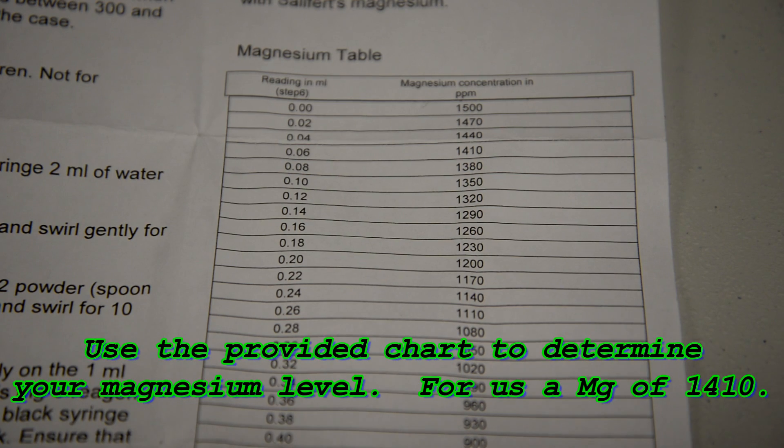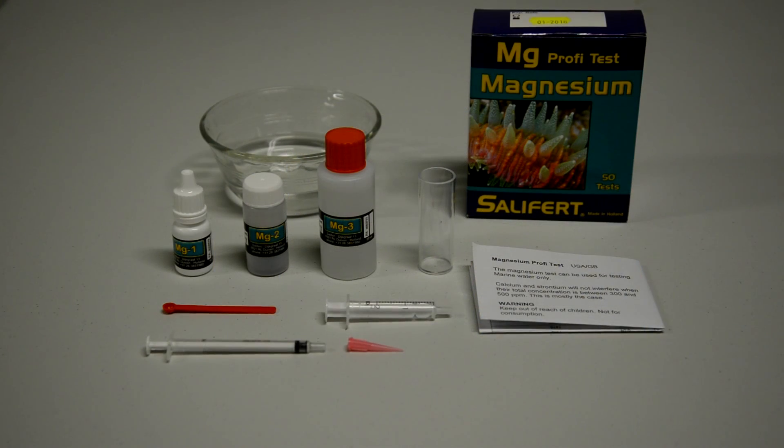Go over to the chart they provided with the directions. And you can see that equates to a magnesium level of 1410. That's right in the range that you want from 1300 to 1500, which is normal seawater. So our tank is doing great.